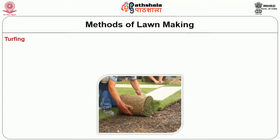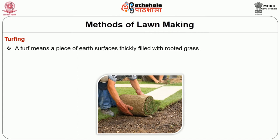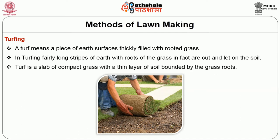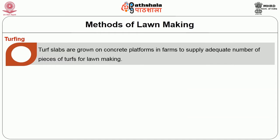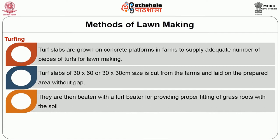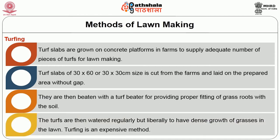The next important method is turfing. It is the most commonly used method. Turfing means a piece of earth surface thickly filled with rooted grasses. In turfing, fairly long strips of earth with roots of the grass intact are cut and laid under soil. Turf is a slab of compact grass with a thin layer of soil bounded by the grass roots. Turf slabs are grown on concrete platforms in farms to supply adequate number of pieces of turfs for lawn making. Turf slabs of 30 cm x 60 cm or 30 x 30 cm size are cut from the farms and laid on the prepared area without gap. They are then beaten with a turf beater for proper knitting of grass roots with the soil. The turfs are then watered regularly but liberally to have dense growth of grasses. Turfing is an expensive method of making lawn.